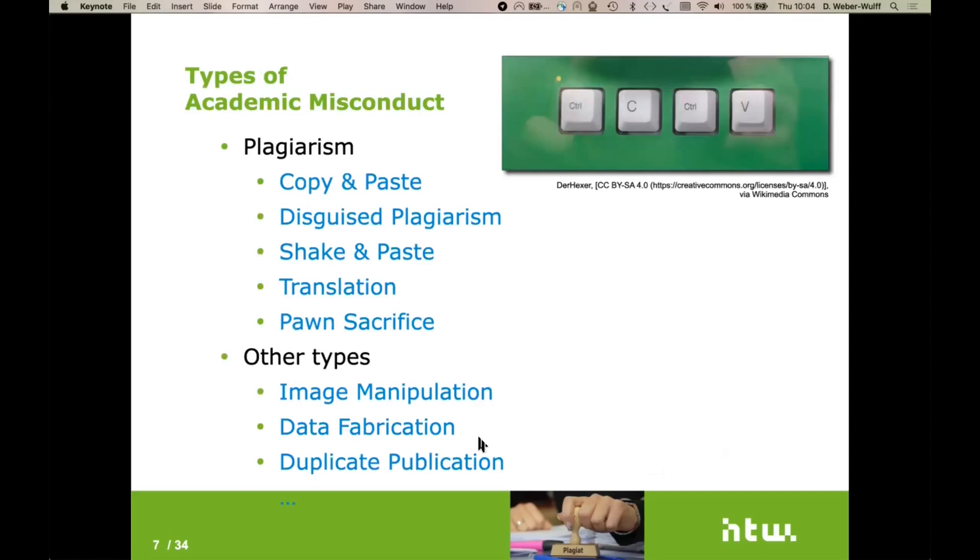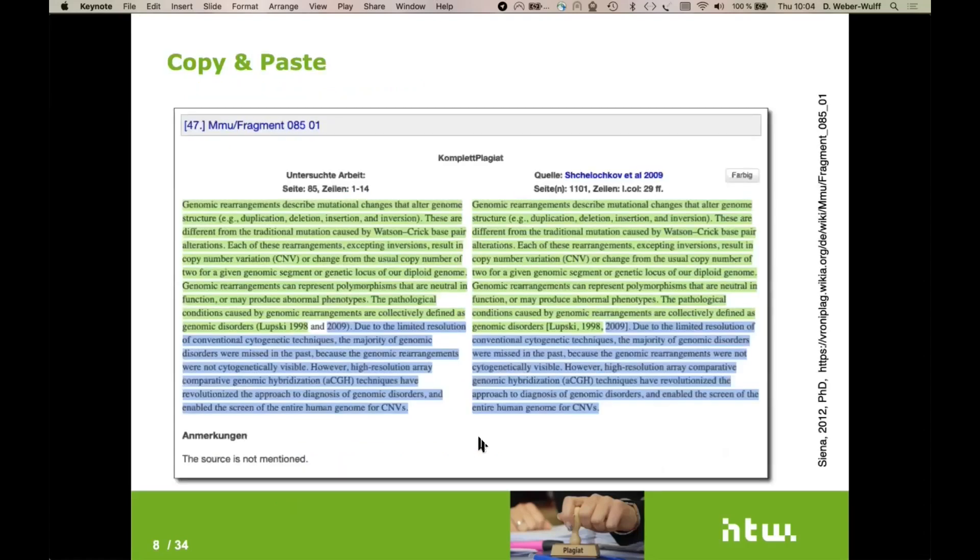So I'd like to go through some types of academic misconduct. I want to talk about different kinds of plagiarism to help make it clear why it's so difficult for software to find plagiarism. And then I just briefly have a few other things of image manipulation, data fabrication, and so on. I'm going to start with copy and paste. This is the kind of plagiarism that is usually very easy to determine.